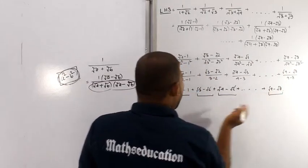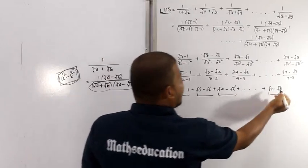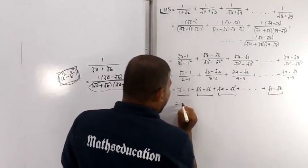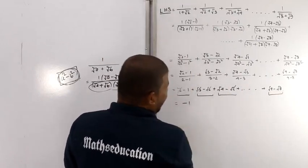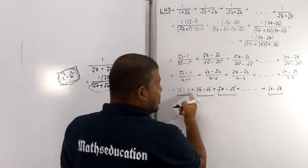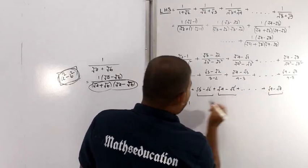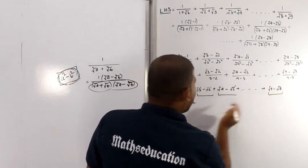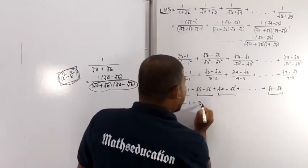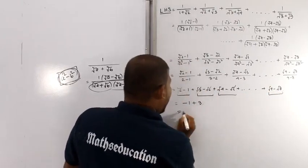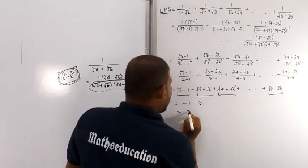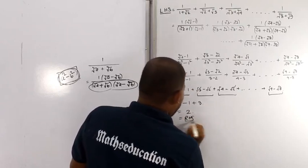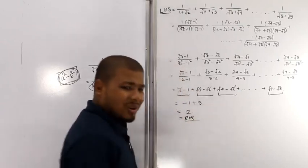After cancellation, we get root over 9 minus 1, which equals 3 minus 1 equals 2. This equals the right hand side, so the answer is 2.